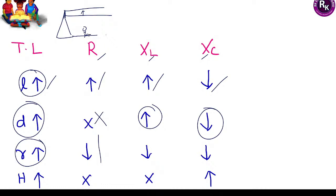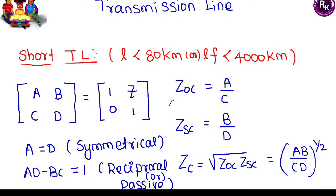Increasing the radius of the conductor: resistance decreases, inductive reactance decreases, and capacitive reactance also decreases. Increasing the height of the tower (height from ground): resistance does not change, inductive reactance does not change, but capacitive reactance decreases.